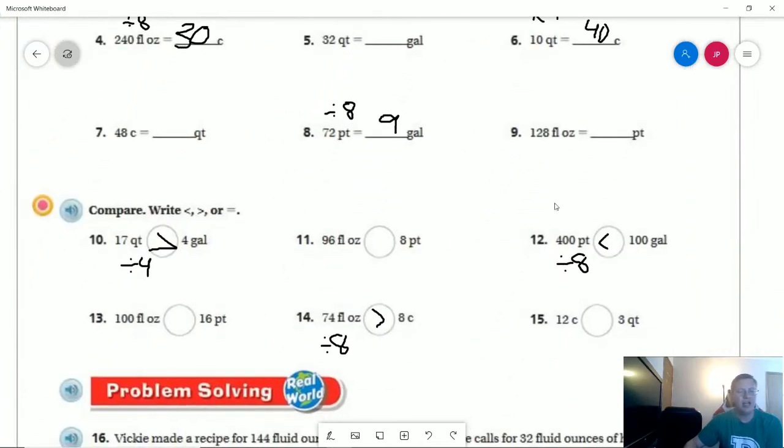Number 10, we could do 2 different things. We could divide by 4 or multiply by 4. There are 4 quarts to a gallon. I could do 4 times 4 to get 16 and know that this side is bigger. Or I can do 17 divided by 4 and figure out that it's going to give me 4 with a remainder, which means this side would be bigger.